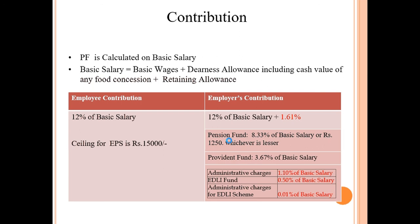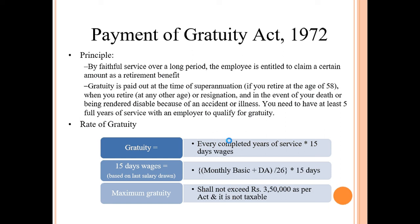The next important component is Provident Fund (PF), which is calculated from the basic salary of the employee — not the gross salary. The basic salary should be a minimum of 40% of gross salary. The employee contribution is 12% of basic salary and the employer contribution is also 12% of basic salary.